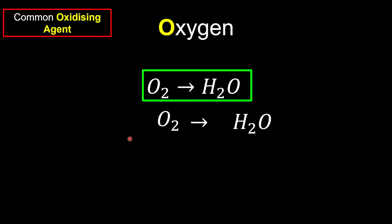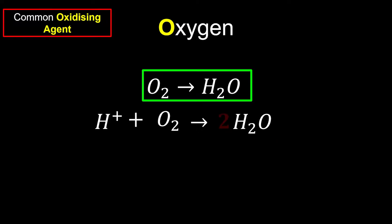So we're going to add hydrogen at the left hand side first. After that, we are balanced with the elements. Now we're going to balance the number of atoms. Our left hand side we have two oxygen, but our right hand side we have only one. So we're going to write down two to balance off the oxygen first.